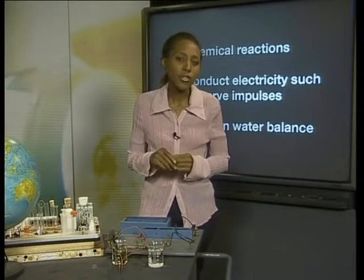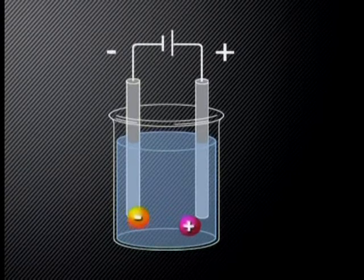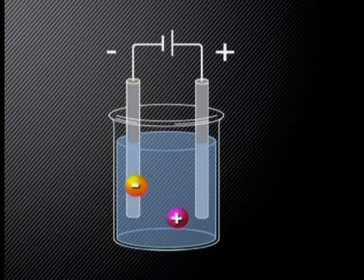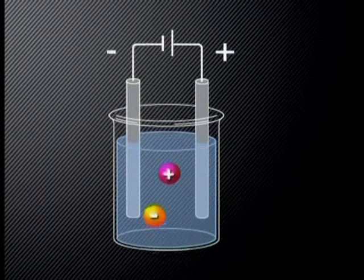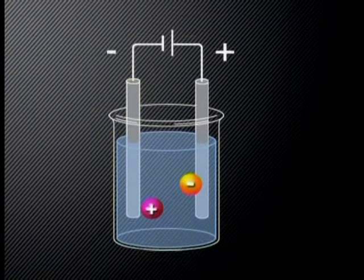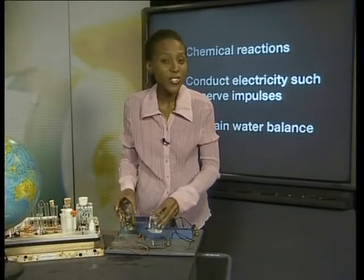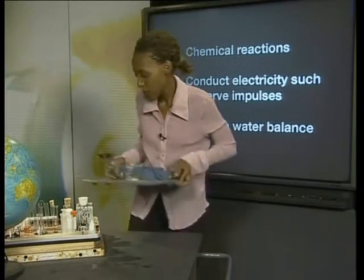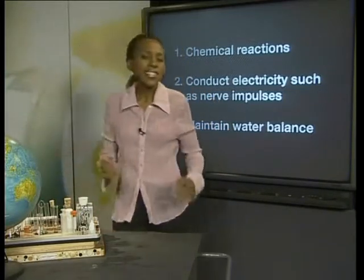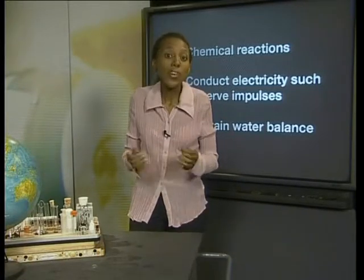Let's have a closer look at the movement of these ions. The graphite rod attached to the positive side of the battery becomes positively charged and attracts the negatively charged ions. In the same way, the rod attached to the negative side of the battery attracts the positive ions. The movement of the ions between the rods causes an electric current to pass between them. Now let's turn our attention to the concept of water balance. Dissolved substances allow organisms to keep the water balance inside them constant so that they do not have too much or too little water in their cells.